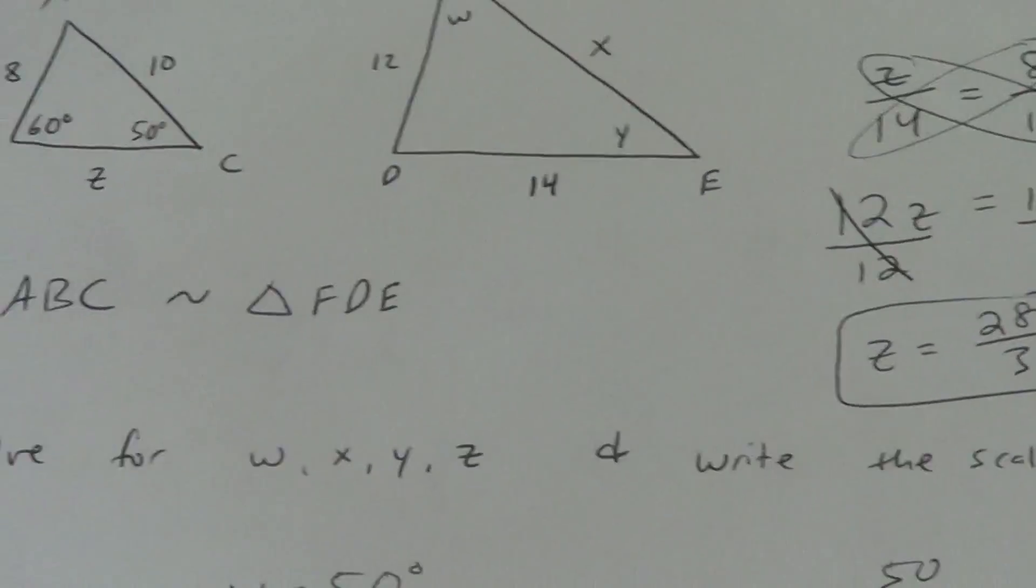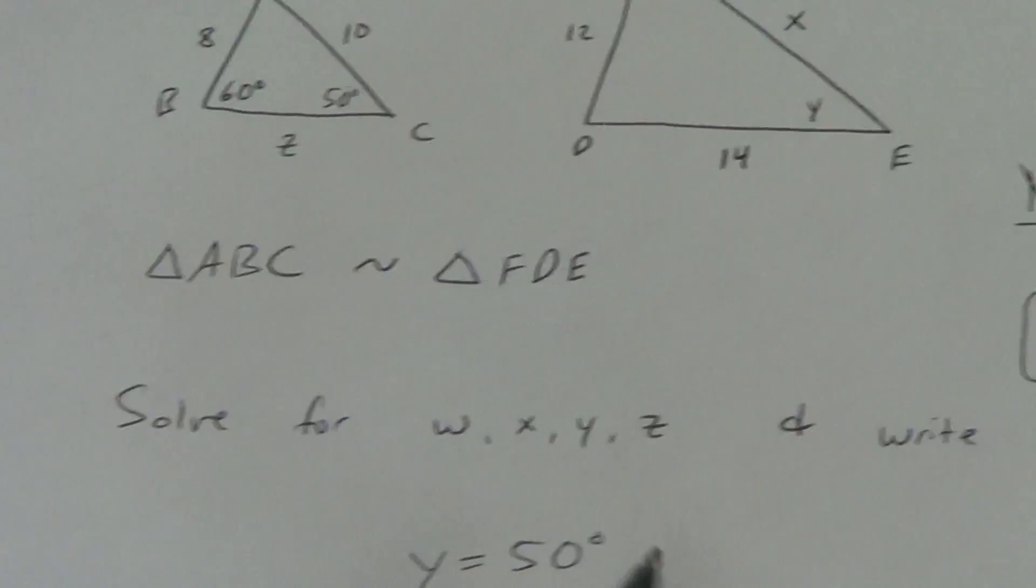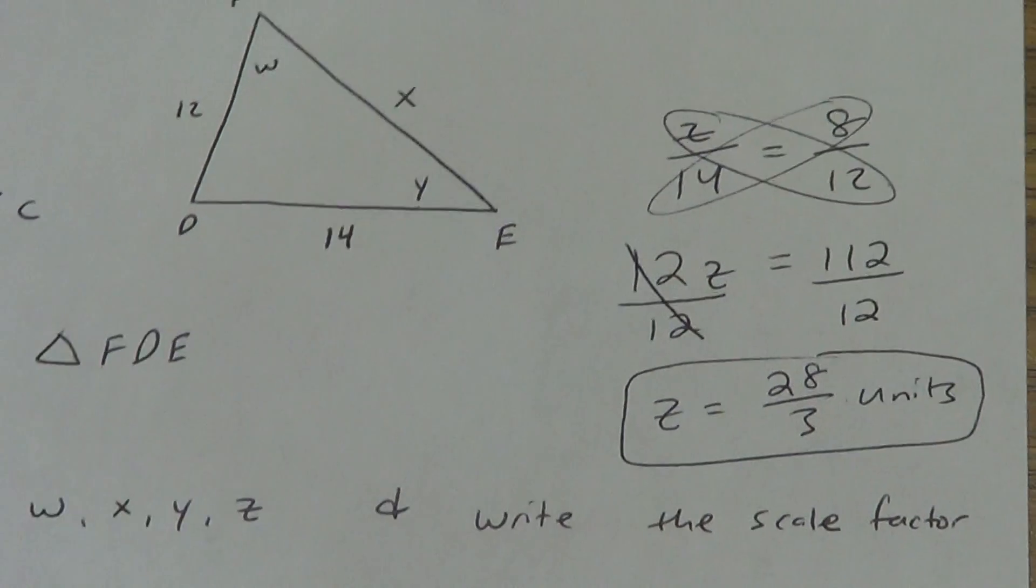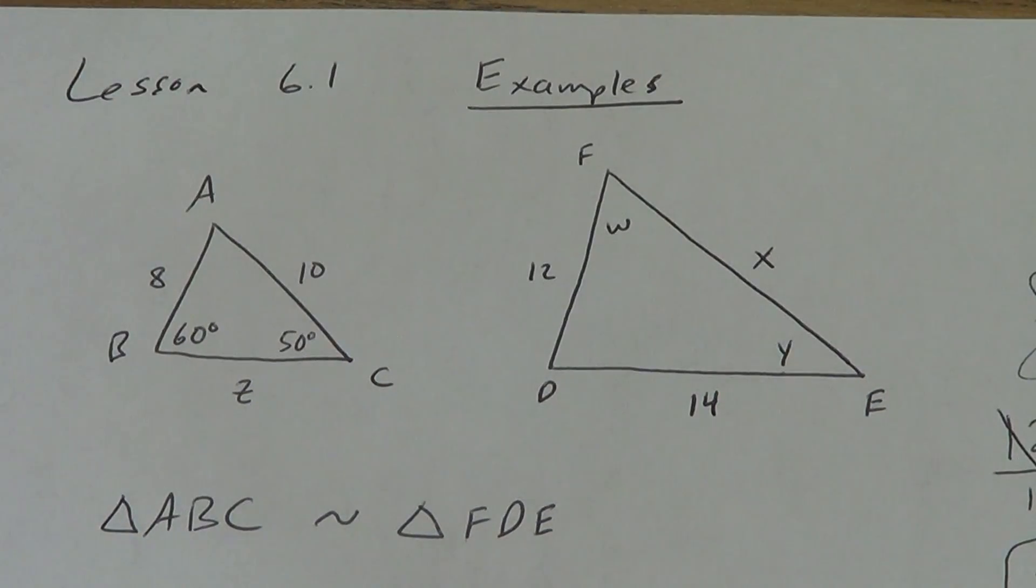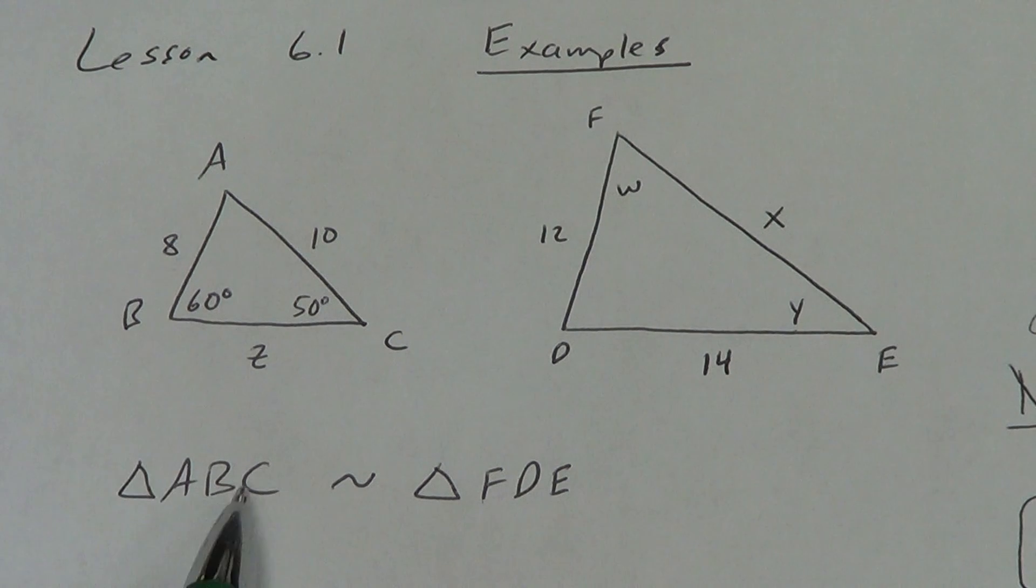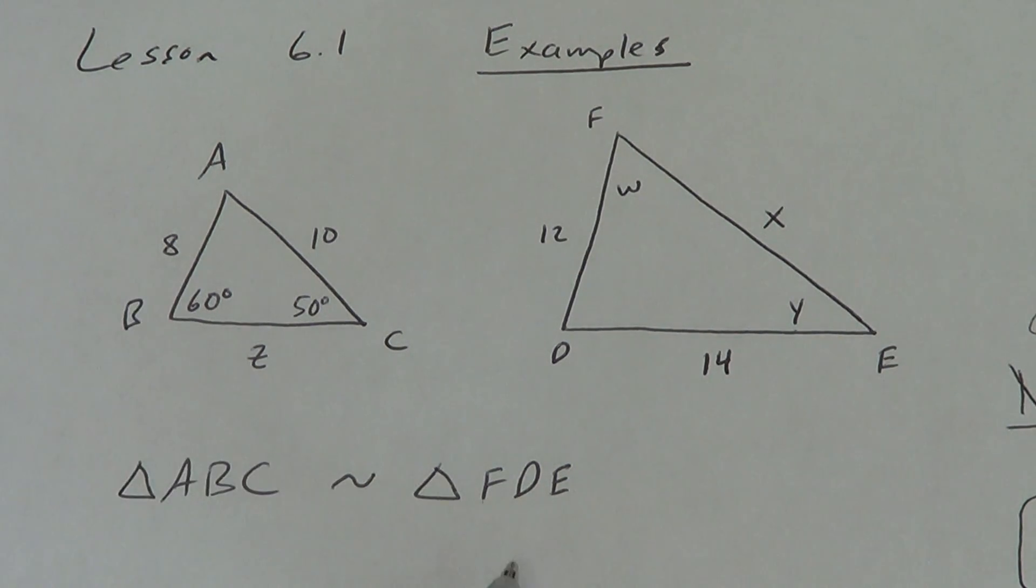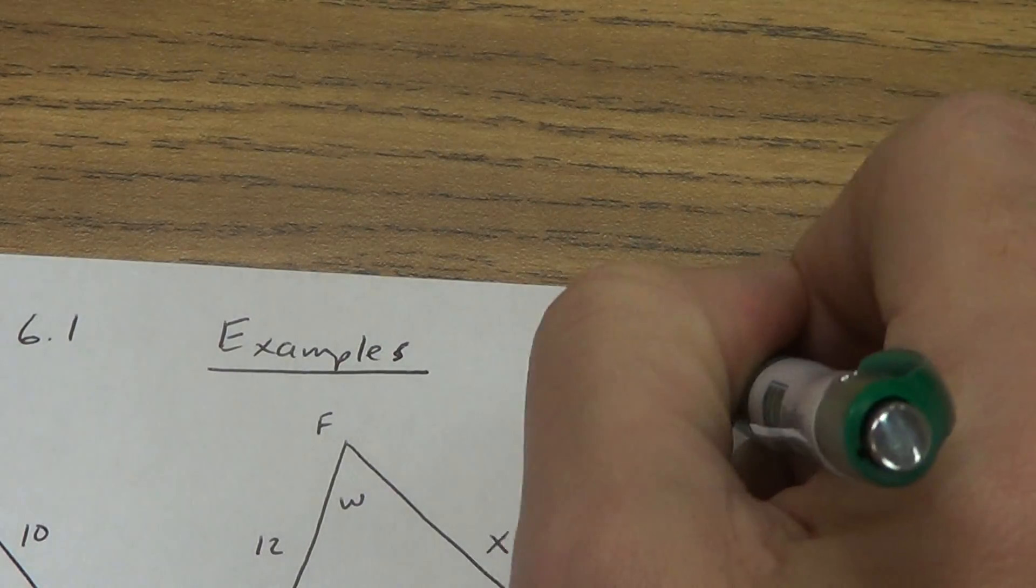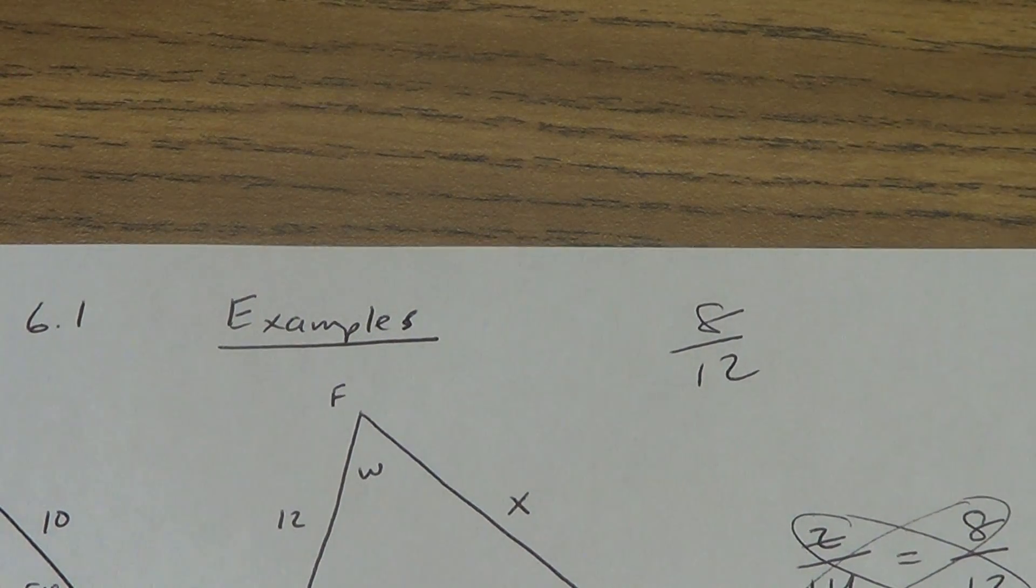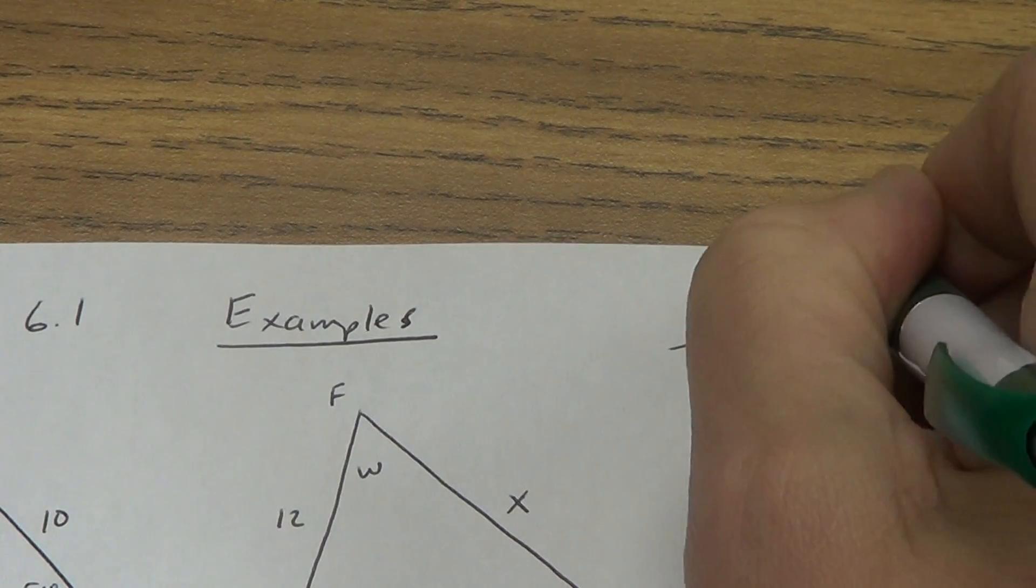Let's see. Have I done everything? Solve for W? Yep. X? Yep. Y? Yes. Z? Yes. Write the scale factor. I haven't done that yet. Scale factor, remember, is new over old or first over second. Now, since they didn't tell me which one was new and which one was old, I'm going to go first over second. So, this is first. I'm going to use an 8. And this is second. So, I'm going to use the 12. So, my scale factor is just 8 over 12. But we want to reduce that if we can. So, that reduces to 2 thirds. That is my scale factor.